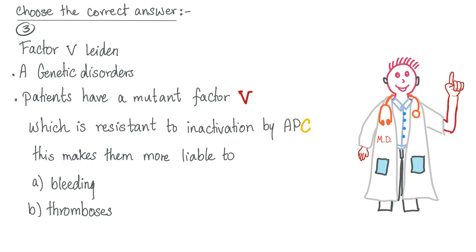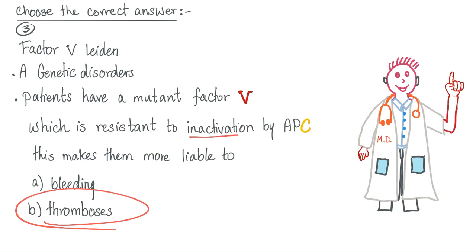Factor V Leiden is a genetic disorder where patients have a mutant factor V which is resistant to inactivation by activated protein C. This makes patients more liable to thrombosis — not bleeding. They are resisting the inactivation, resisting the brakes, and therefore have nothing but acceleration of the process of thrombosis.